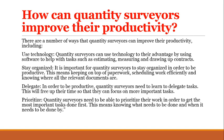How can quantity surveyors improve their productivity? There are a number of ways, including: 1. Use technology — quantity surveyors can use software to help with tasks such as estimating, measuring, and drawing up contracts. 2. Stay organized — keep on top of paperwork, schedule work efficiently, and know where all relevant documents are. 3. Delegate tasks — this frees up time to focus on more important work. 4. Prioritize — quantity surveyors need to prioritize their work to get the most important tasks done first, knowing what needs to be done and when.